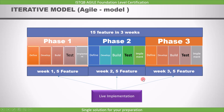Each phase has a define, develop, build, test, and implementation stage. So we can see that live implementation of the software will happen in all of the phases. We are repeating the steps in each one, and this is why it is called an iterative development model.